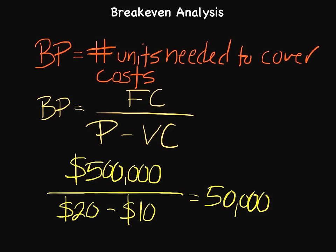This is a starting point for a good discussion, because you might be able to change a couple of these variables. There are three variables: fixed costs, price, and variable costs. Maybe we have the ability to raise our price a little bit — maybe we're not priced competitively and we're undercutting ourselves. If we raise price, our margins are better, which means we don't need to sell as many products to break even. The break-even point would be less than 50,000 units.